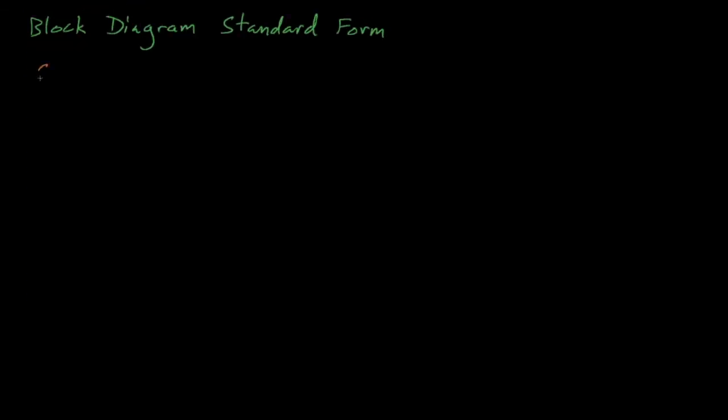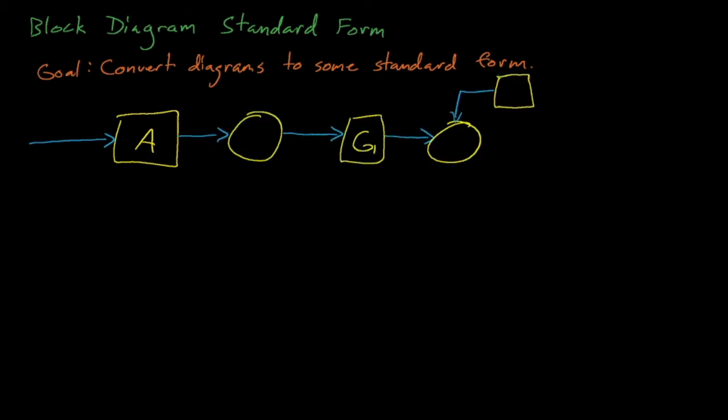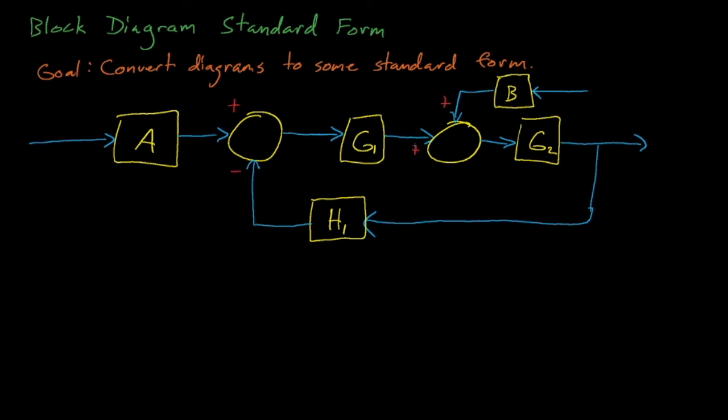We can draw an even more general version of this standard equation using this almost universal model of a system's dynamic behavior. In this general form, a command signal, or input V, is acted on by a reference input element A and then passed into a comparator.